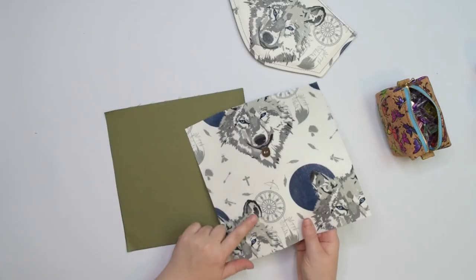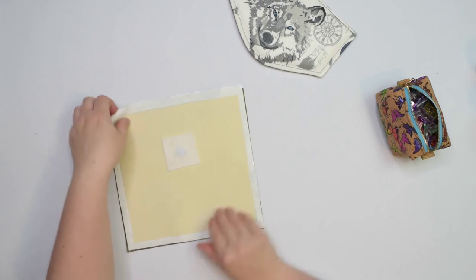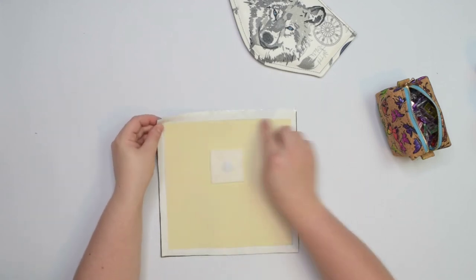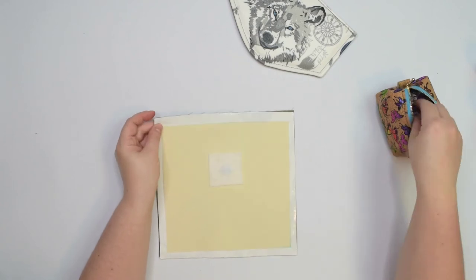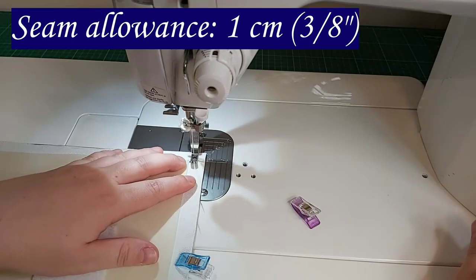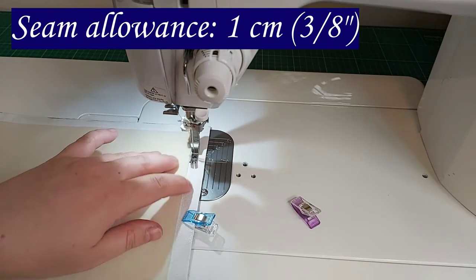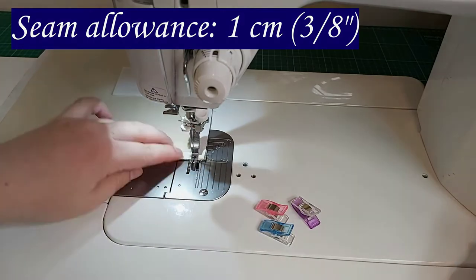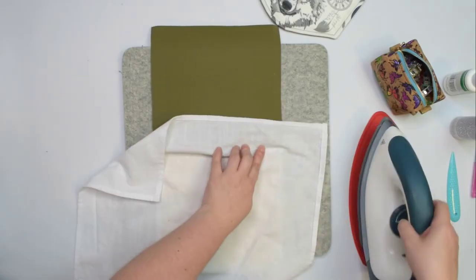Take both slip pocket pieces and with right sides together, place them on top of each other. Line them up and pin along the top edge. Now you can sew the seam using 1cm seam allowance. Open the seam and press it flat.